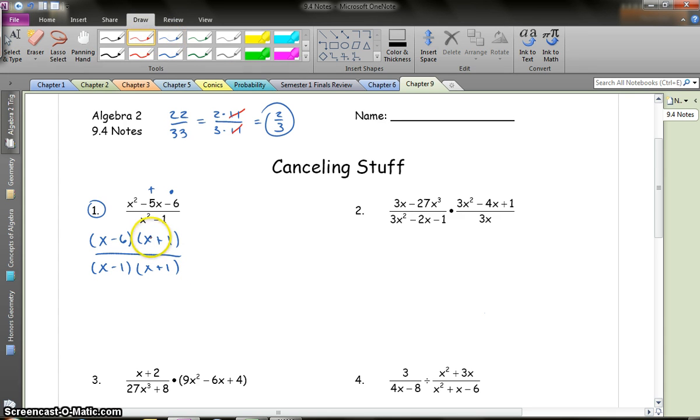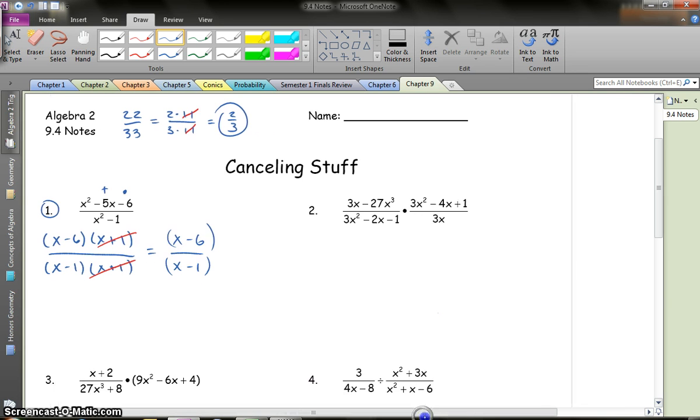Now, if you notice, x plus one is the same on top and bottom. Think of if I told you x had a value of two. Well, two plus one would be three, two plus one would be three, and I'd have a similar situation that we had up here. So those are gone, and my solution I'm left with is x minus six over x minus one. Now, these are grouped together. We can't just cross out the x's. That's not allowed, because think about it. If x was two, two minus six would result in negative four, and two minus one would result in one. So those are two different values, so that's my solution I'm looking for.